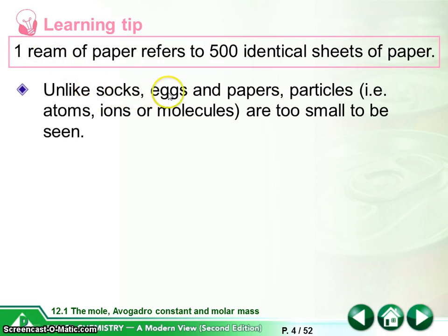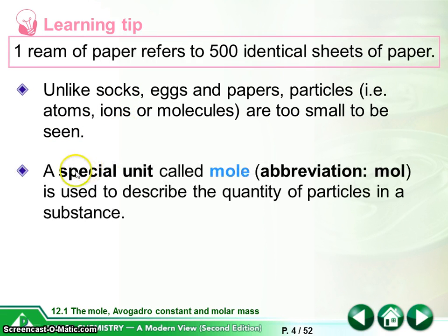Unlike socks, eggs and paper, particles are too small to be seen. So that's why it is impossible for us to count them one by one. That would be a huge number. We will use a special unit called mole to describe the quantity of particles in a substance.